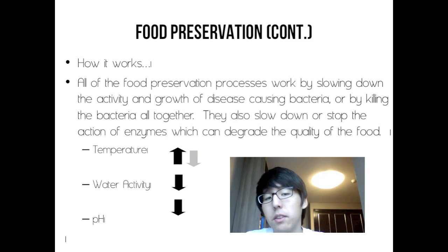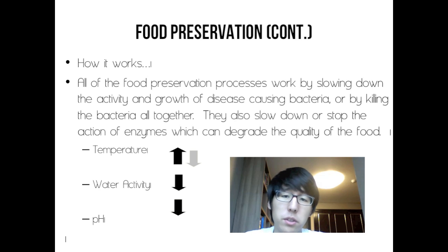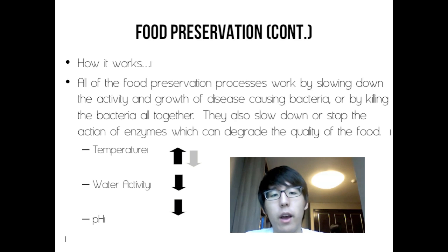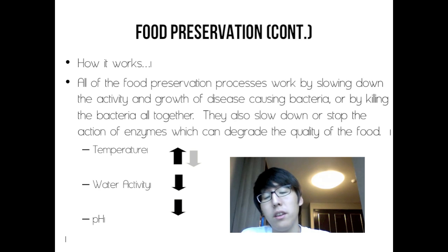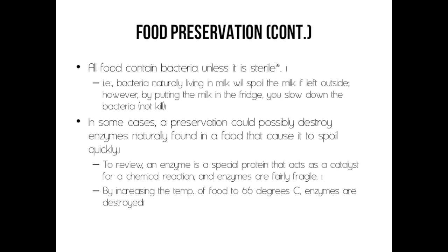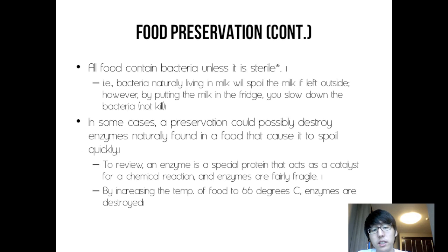How it works: all food preservation processes work by slowing down the activity and growth of disease-causing bacteria or by killing the bacteria altogether. They also slow down or stop the action of enzymes which can degrade the quality of the food. Pasteurization is a great example of how it slows down bacteria, because it doesn't kill the bacteria altogether when it's put in the fridge. As the temperature goes up or down, it correlates with the water activity as well as the pH levels.